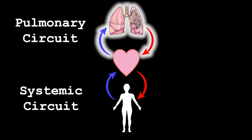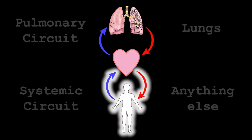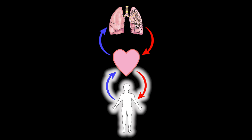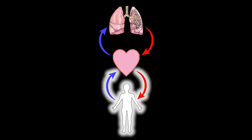Pulmonary means relating to the lungs, and systemic means anything outside the lungs — so things like muscles, bones, kidneys, your brain, your stomach, anything that's outside of the lungs. As blood circulates, it is going to alternate back and forth between the pulmonary circuit and the systemic circuit.